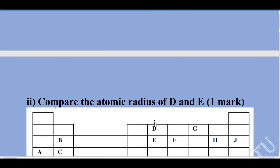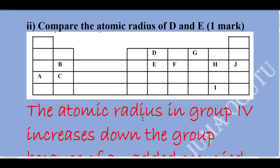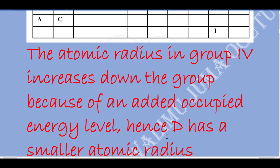Compare the atomic radius of D and E. D and E are in the same group. The atomic radius increases down the group because as you move down, an extra energy level is created. So D has a smaller radius compared to E. The atomic radius in group 4 increases down the group because of an added occupied energy level. Hence, D has a smaller atomic radius compared to E.